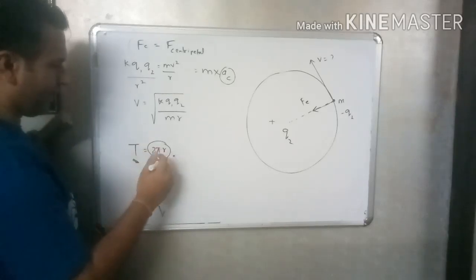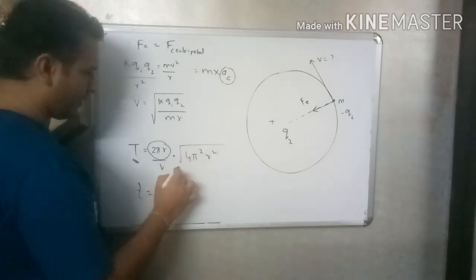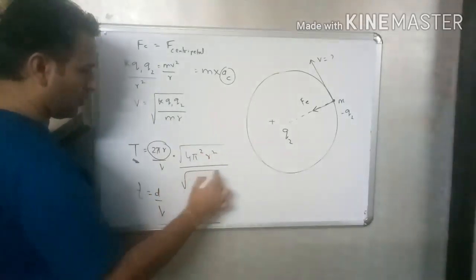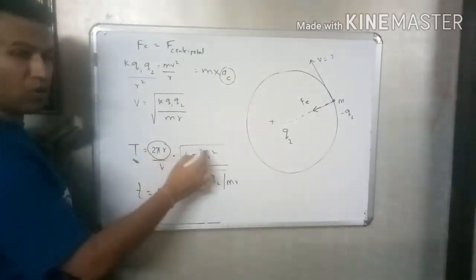2 pi r under root, 4 pi square r square divided by under root k q1 q2 by mr.